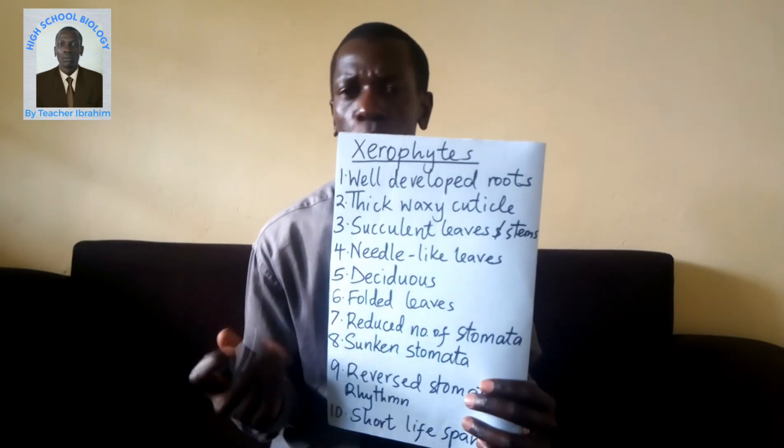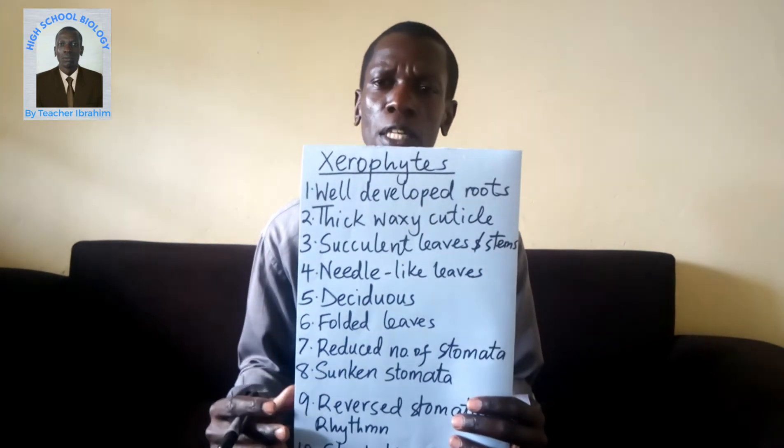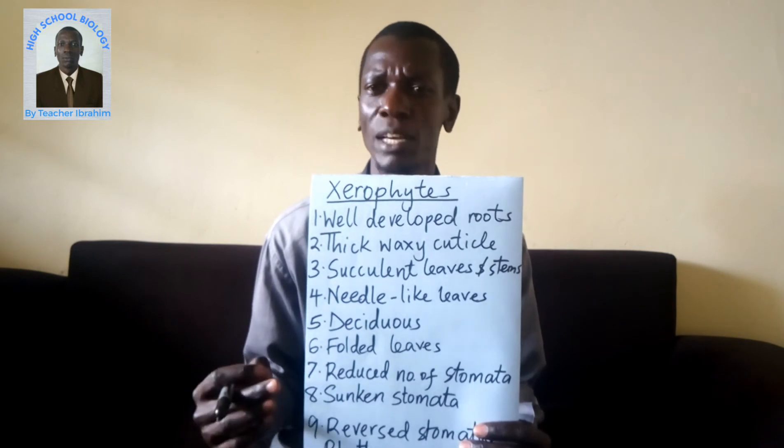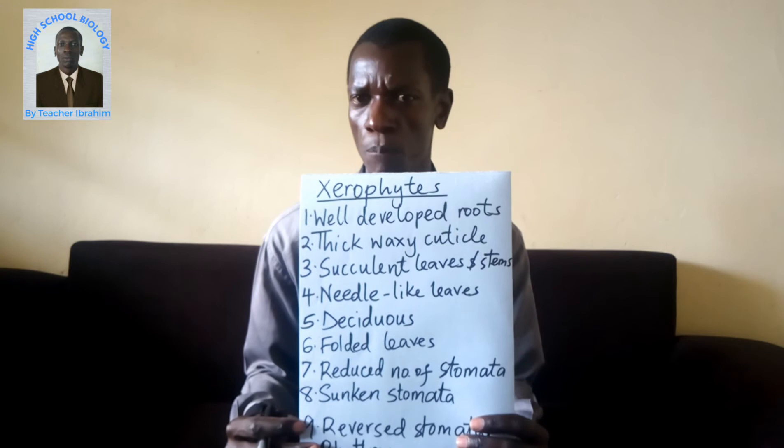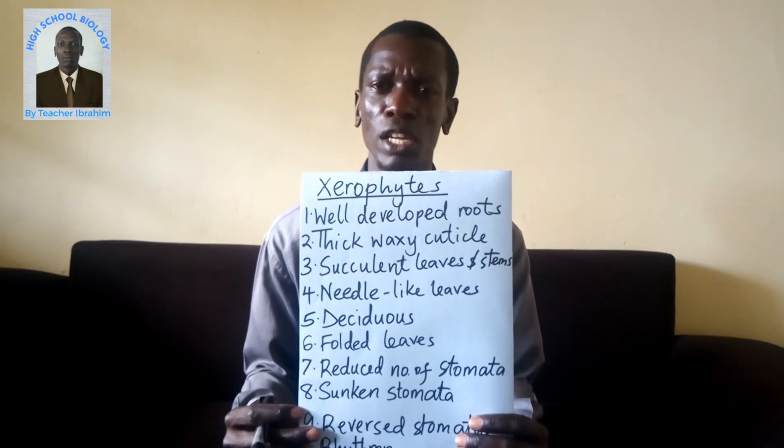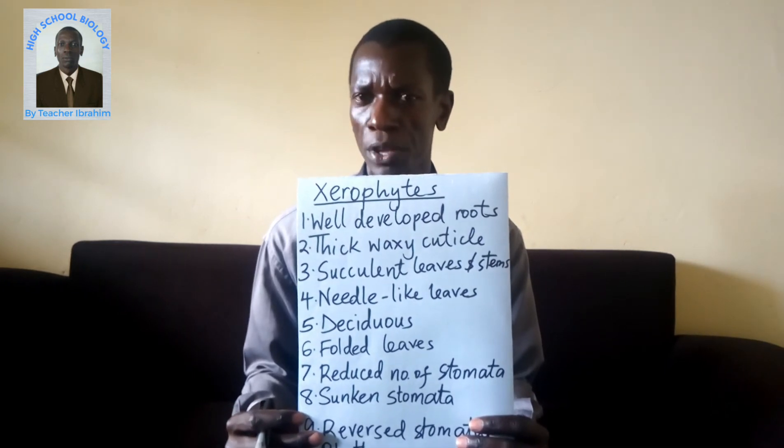Adaptation number five: they are deciduous plants — those capable of shedding their leaves during the dry season so as to reduce the rate of transpiration. Adaptation number six: they have folded leaves to reduce the rate of transpiration. When a leaf is folded, the surface exposed to the external environment is reduced, decreasing water loss into the atmosphere.